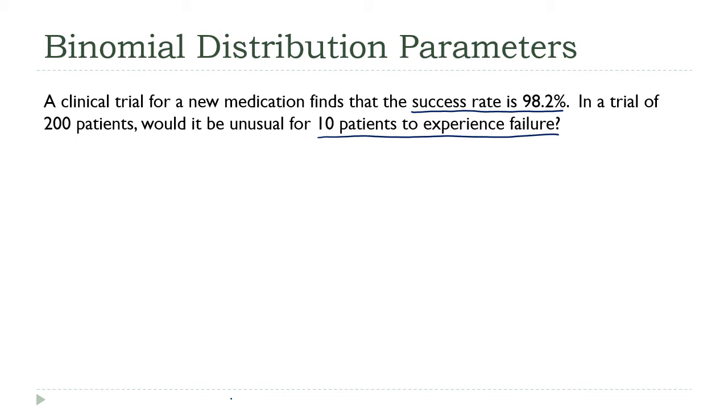So what I'm going to do is because I was asked about failed patients, I need to do this in terms of failure. So I'm going to do P equals the probability of failure, which is 1 minus 0.982, right? That's 0.018.